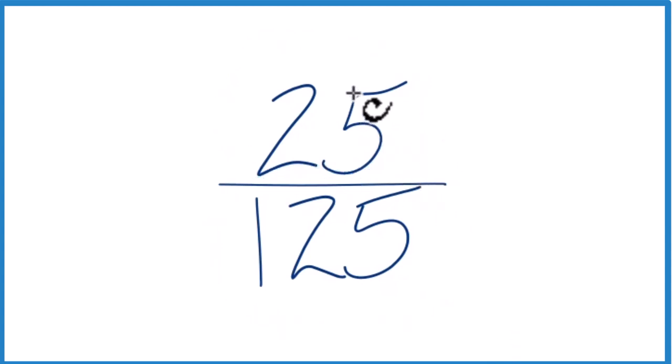We want to simplify 25 over 125 down to its lowest terms. So to do that, we need to find a common factor, something that goes into 25 and 125 evenly as a whole number. It turns out that 25 will go into 125 five times.